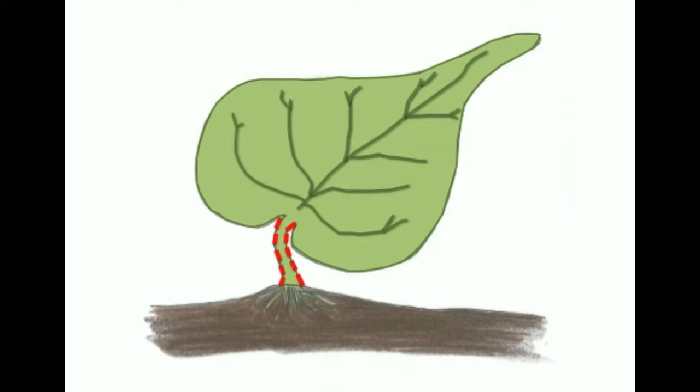Upright stance was not the only obstacle associated with the terrestrialization process. Early land plants also needed to evolve a system to anchor them to the ground and allow them to get nutrition and water from soils.